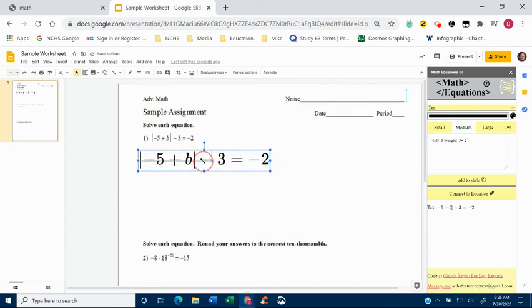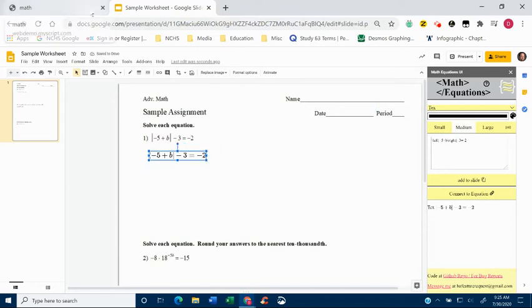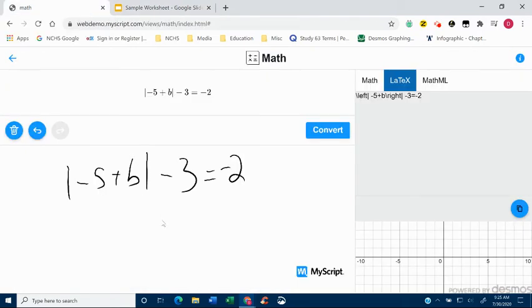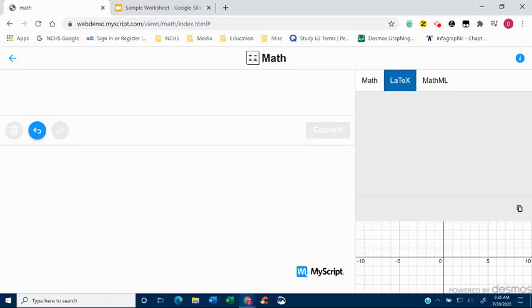Even if you make this small or large, for some reason it still does that. So now I can put this into my text box, make it the size that I want, and then I can go back. Okay, I know that the next step is to add three to each side.